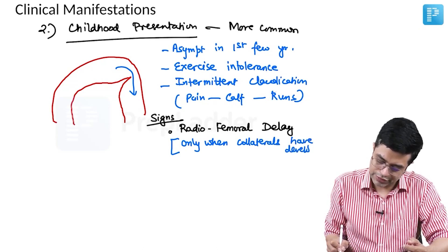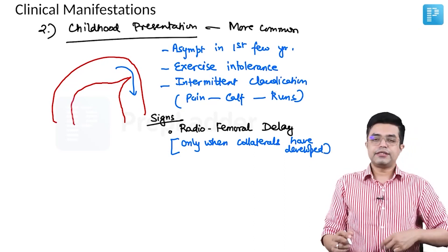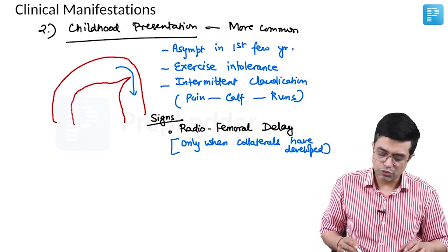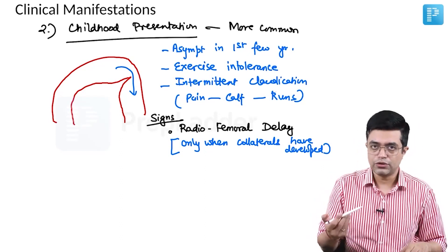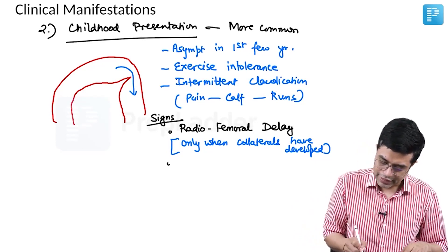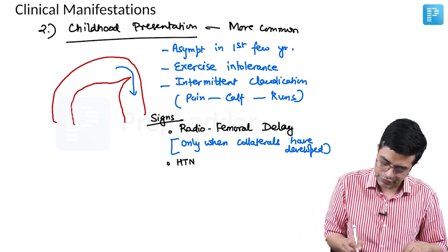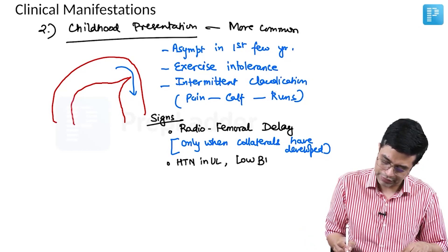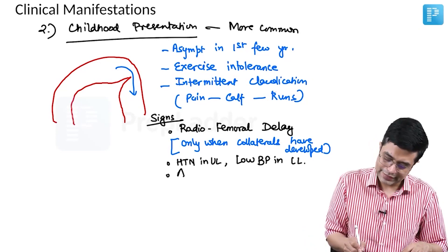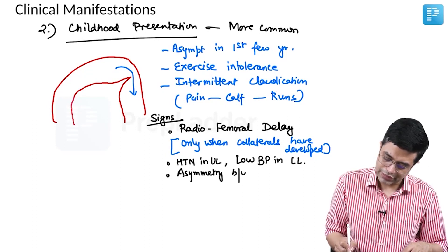Collaterals develop because arteries arising proximal to the narrowing have more blood supply while those arising distal have less. Additionally, there will be hypertension in the upper limbs and hypotension — low BP — in the lower limbs.